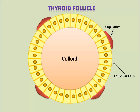The follicular cells have polarized membranes, meaning that there are different transport proteins available on the apical and basolateral membranes. The apical membrane faces the lumen of the follicle, where the colloid is stored. The basolateral membrane of the follicular cell faces the surrounding capillaries.